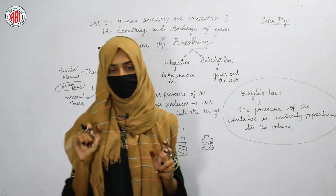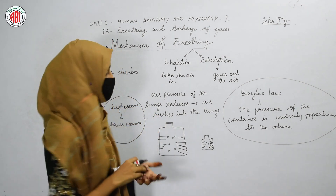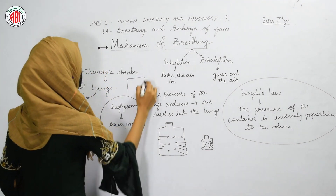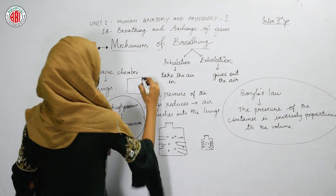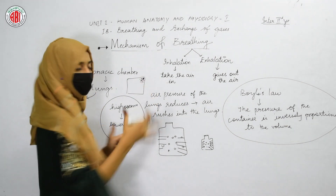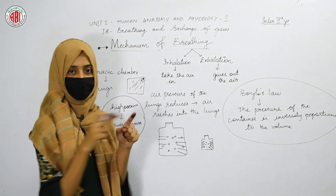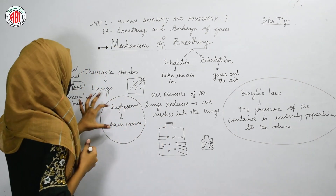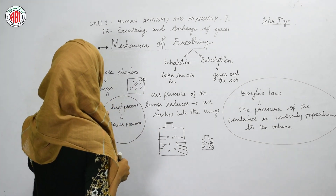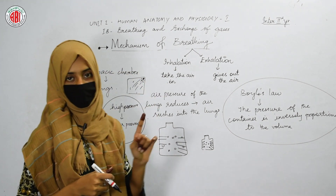The air always moves from the higher pressure to the lower pressure region. Based on this principle, the mechanism of inhalation takes place. Whenever the thoracic chamber expands and gets larger in size, the lung size also gets larger. The sternum is present ventrally and the vertebral column is present dorsally. Bones coming from the vertebral column and attaching to the sternum are called ribs, and the diaphragm is the lobe-shaped structure at the lower side.